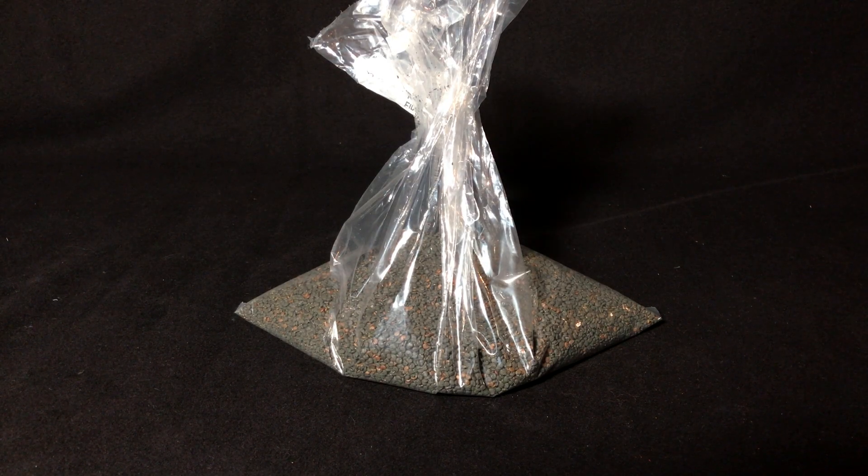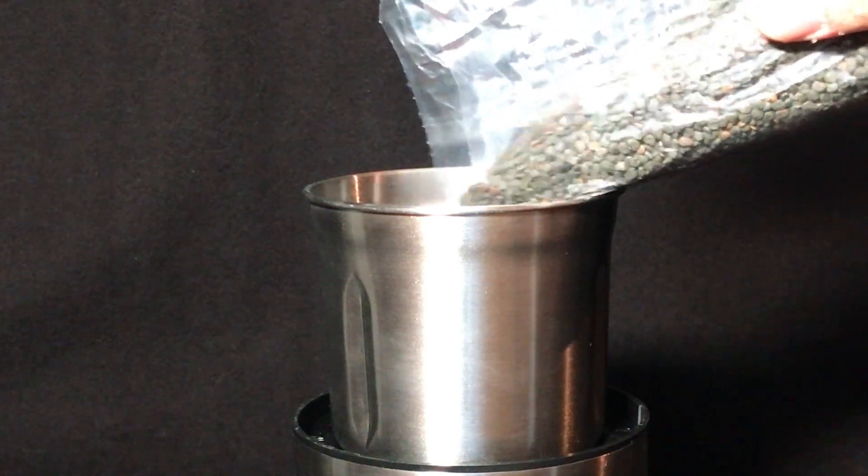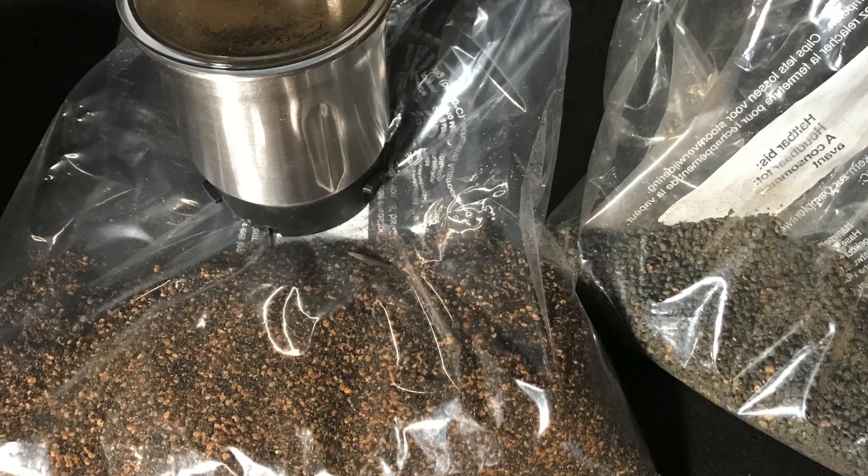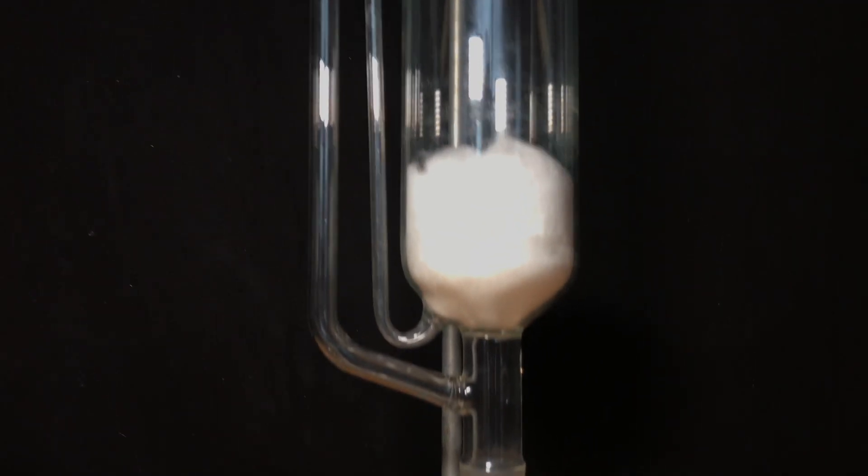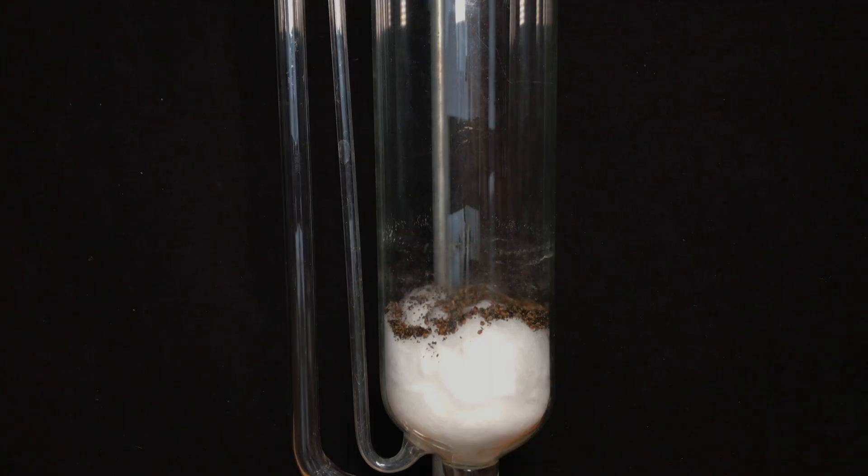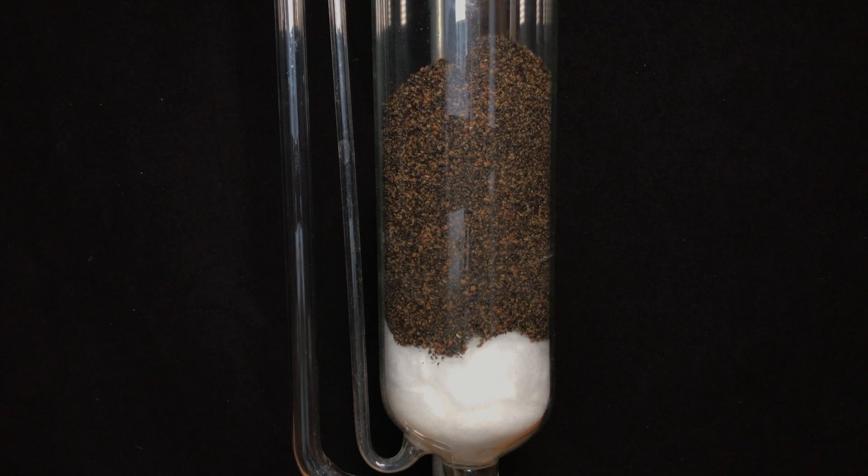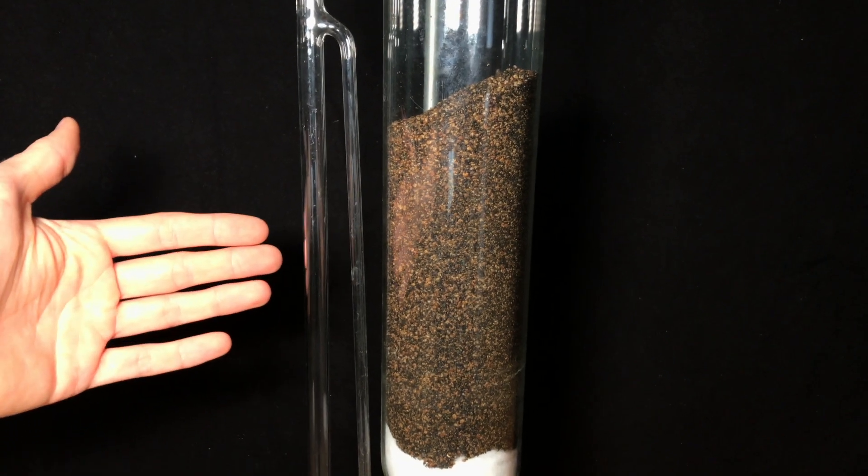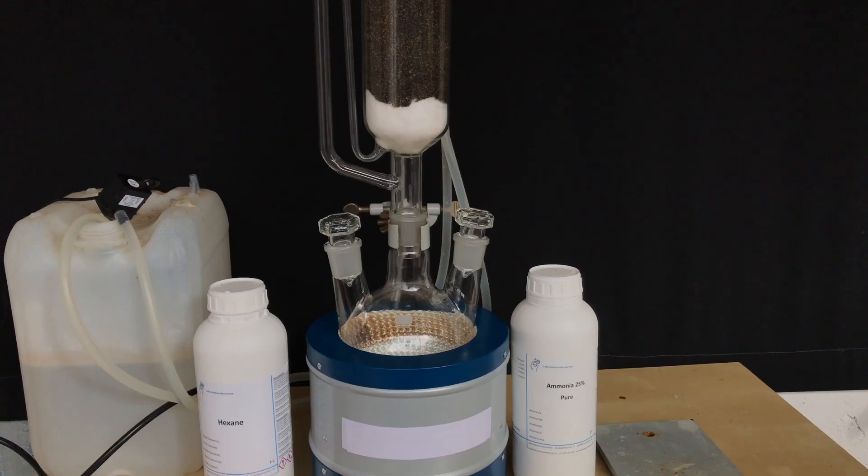The most important ingredient in this extraction are of course the Datura stramonium seeds. They were ground up to increase the surface area and then put into this big extractor. It is not a Soxhlet extractor because it has no siphoning cycles, but it is an extractor and it works. If you know what these are called let me know down in the comments.